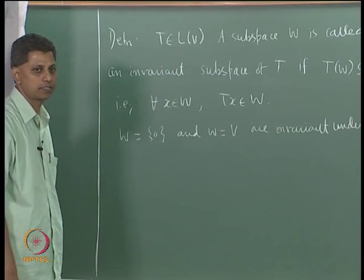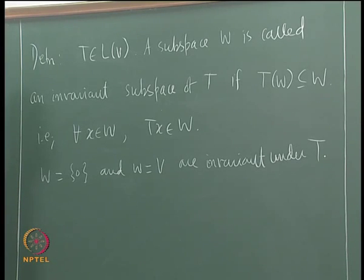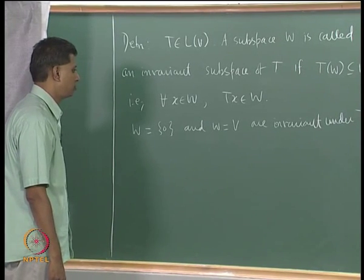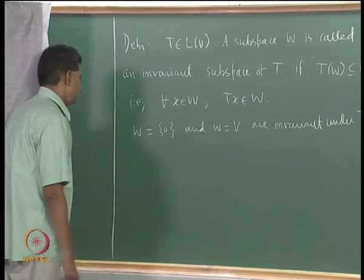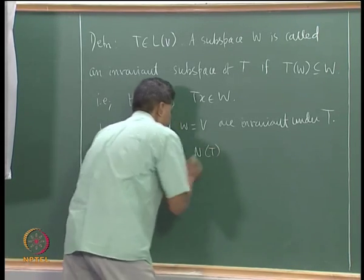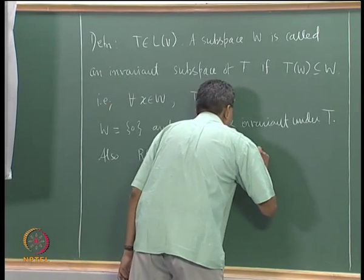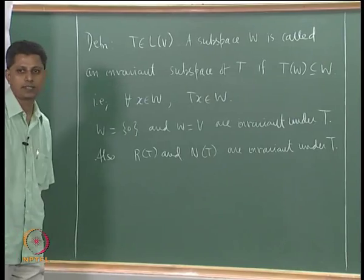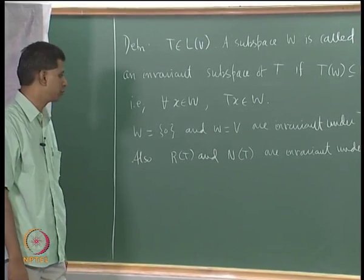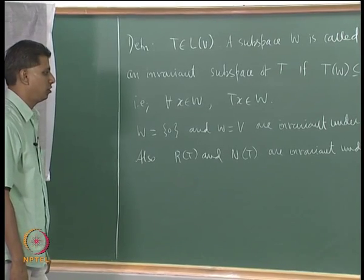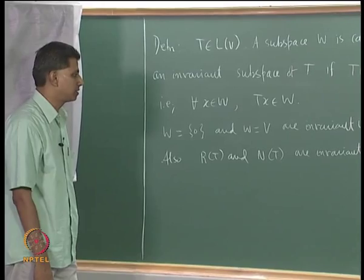We will be interested in whether there are proper subspaces that are invariant under T, and how this plays a role in characterizing diagonalizability. The range space and the null space are invariant under T — these are easy to verify. We also have another set of subspaces that are invariant under T.